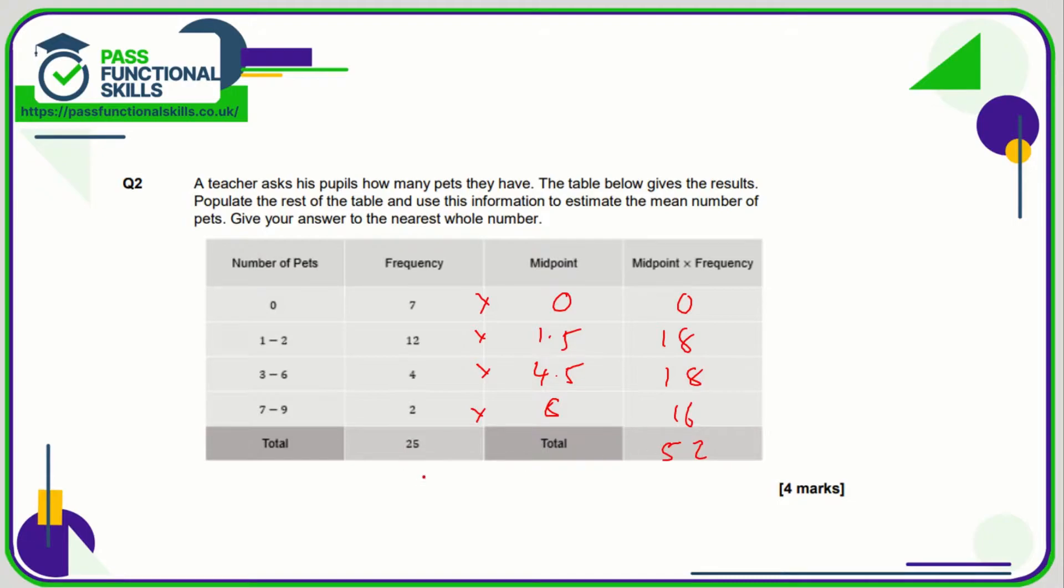Add this column up, we're going to get 52. So 52 is going to be divided by 25. So we're assuming that in total there are 52 pets shared among 25 children, and 52 divided by 25 is 2.08. And giving our answer to the nearest whole number is 2, so the answer is 2 pets.